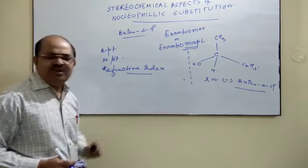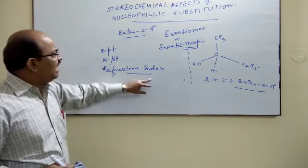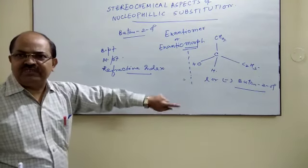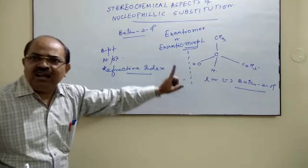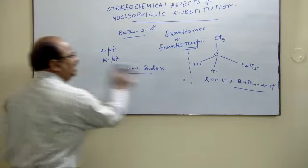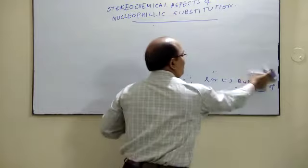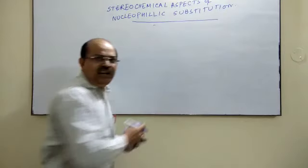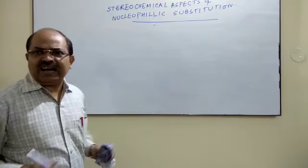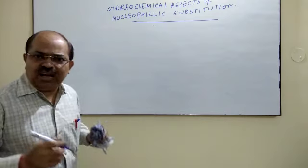On the basis of optical rotation, we can distinguish whether a compound is dextro or levo. Now, if we mix both the D and L optically active compounds in equal amounts,